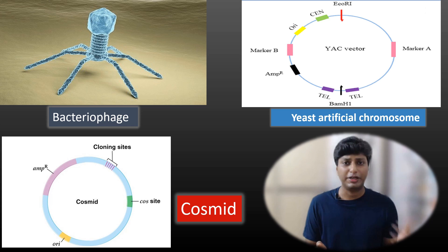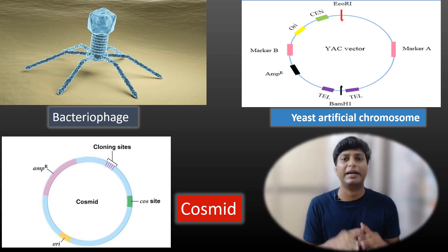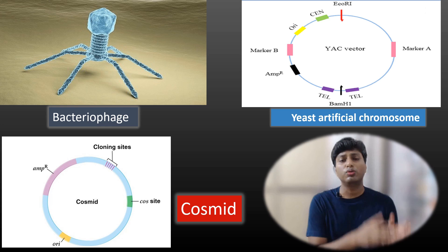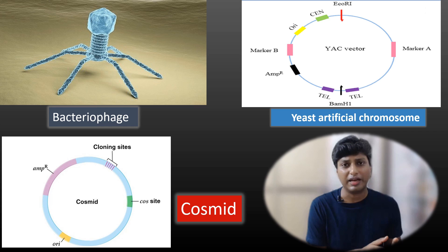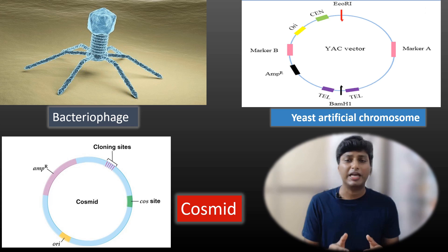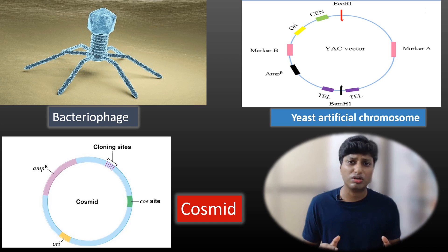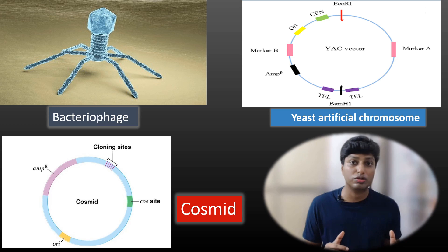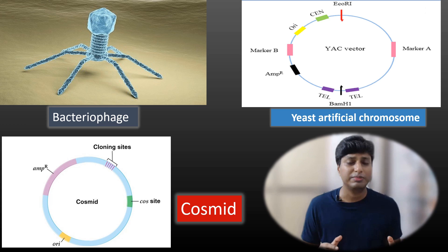Different cloning vectors include bacteriophages, yeast artificial chromosomes, and cosmids. Bacteriophages are viruses which infect bacteria, and the DNA of bacteriophages is often used to transfer a foreign gene inside a bacteria. Cosmids are similar to plasmids, but the difference is that inside a cosmid there are certain cos sites integrated, which are obtained from the DNA of a bacteriophage. The yeast genome — that is yeast DNA — is also used to transfer a foreign gene inside a host, that is yeast. All these are different types of cloning vectors.